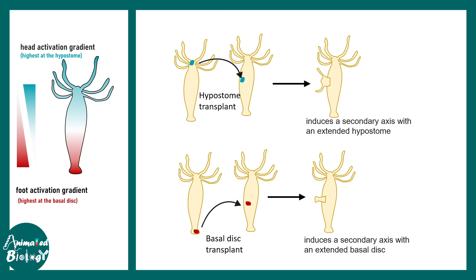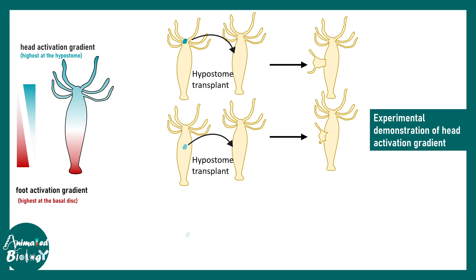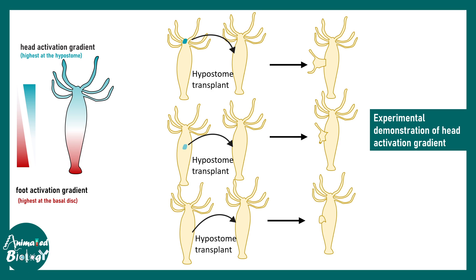While these experiments are informative, they don't directly prove a gradient exists. A sequential grafting experiment is required. In this case, instead of the hypostome, a sub-hypostome region — slightly below the tip — is transplanted. As tissue is taken progressively farther from the top, the capability to regenerate a head decreases gradually. This demonstrates that the concentration of the head-inducing molecule is decreasing along the body axis, confirming the head activation gradient. Remarkably, these experiments were done without sophisticated molecular biology tools — simple grafting was sufficient to demonstrate this.